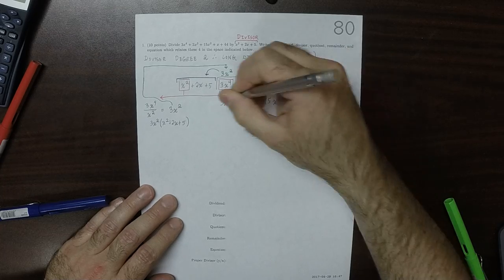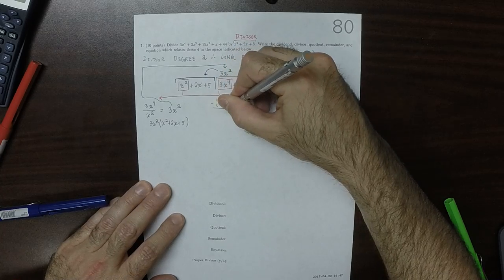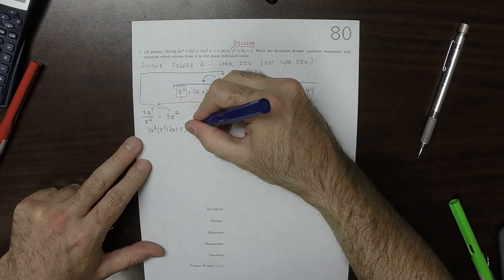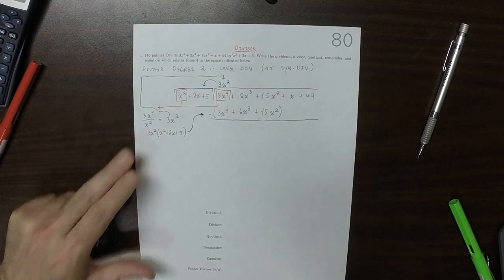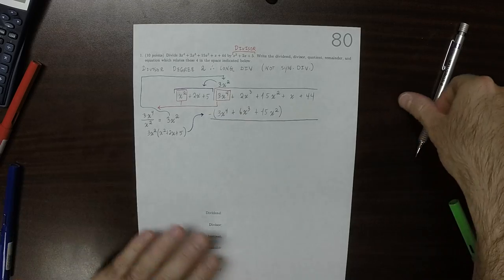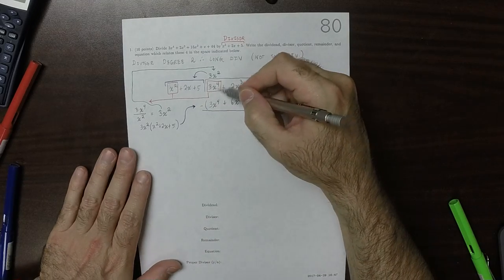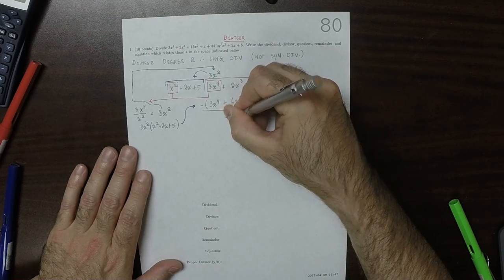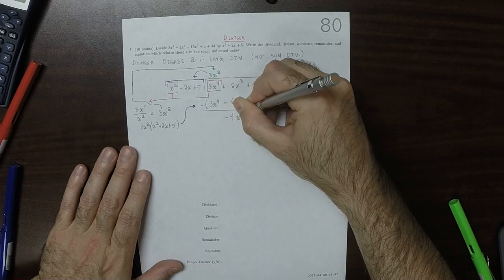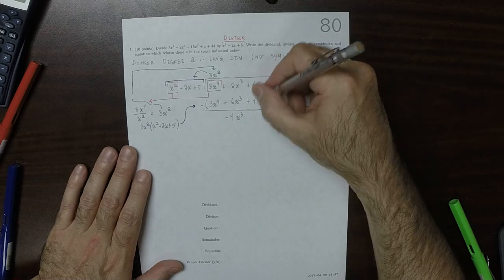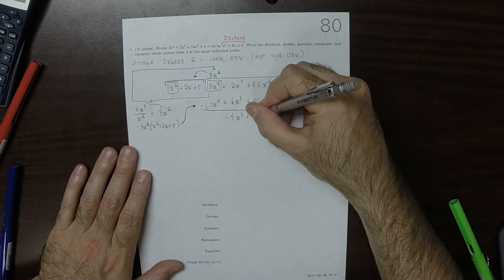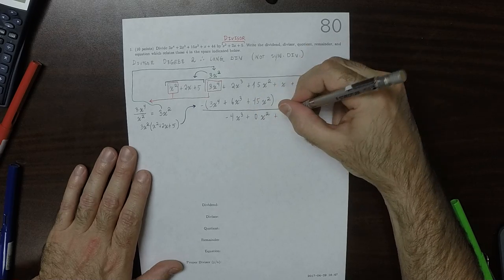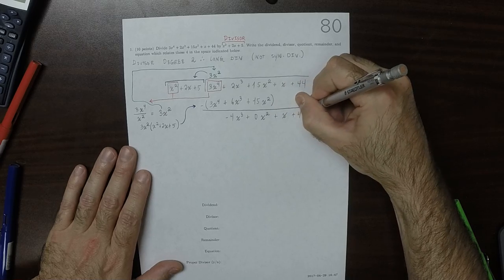All of that gets subtracted. The degree 4 terms zero out, so we'll have negative 4x cubed, plus zero x squared, and then carry down plus x plus 44.